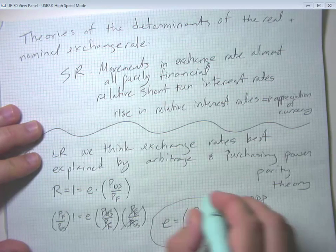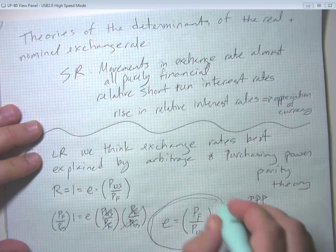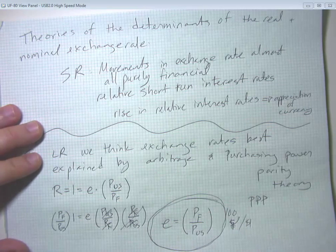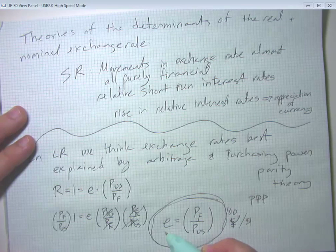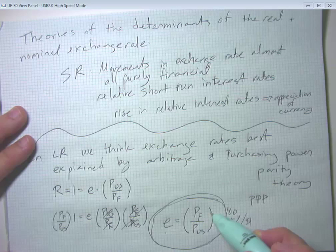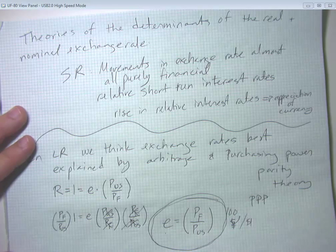So this is in many ways our prediction of where the nominal exchange rate is going to head in the long run. So that in the long run, we think changes in the nominal exchange rate are due to changes in the relative price levels.